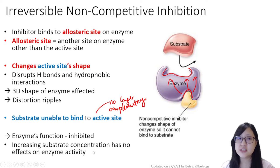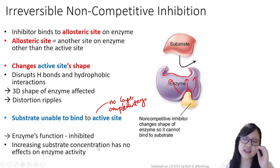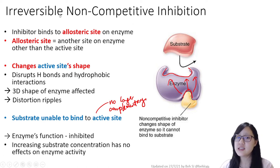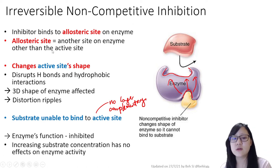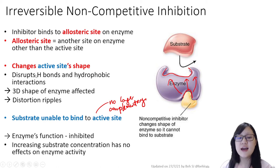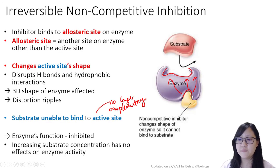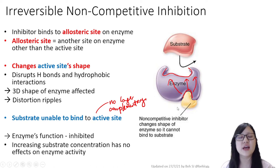Increasing substrate concentration would have no effect on enzyme activity in irreversible non-competitive inhibition. The binding is permanent, and therefore the enzyme that the inhibitor has bound to will not work anymore — it's as if the enzyme isn't there at all.